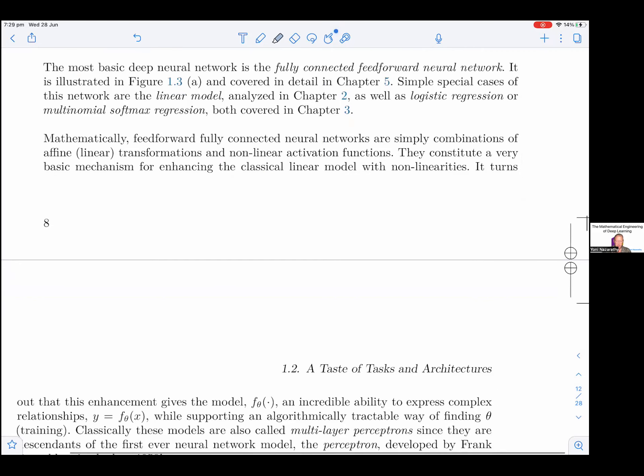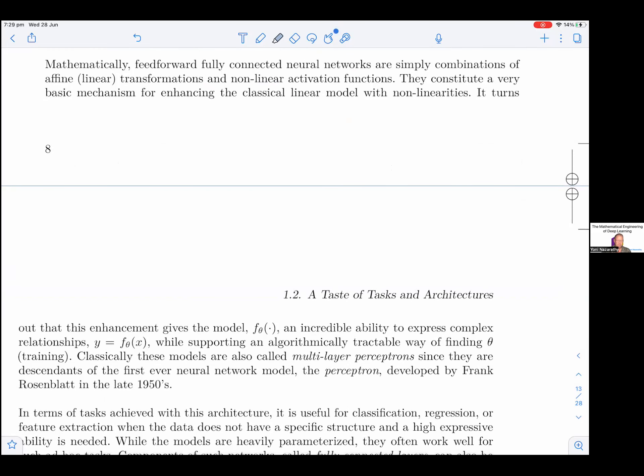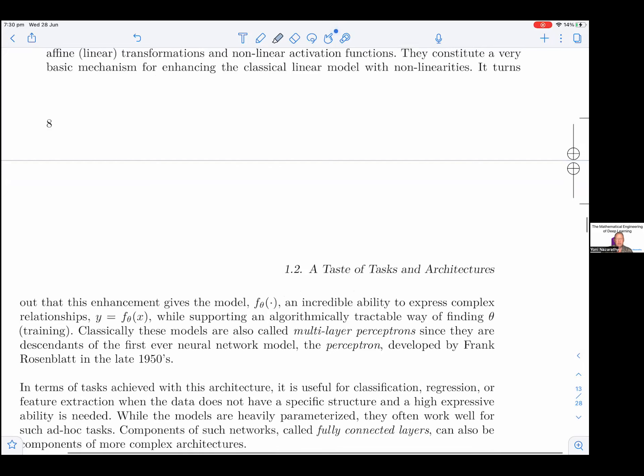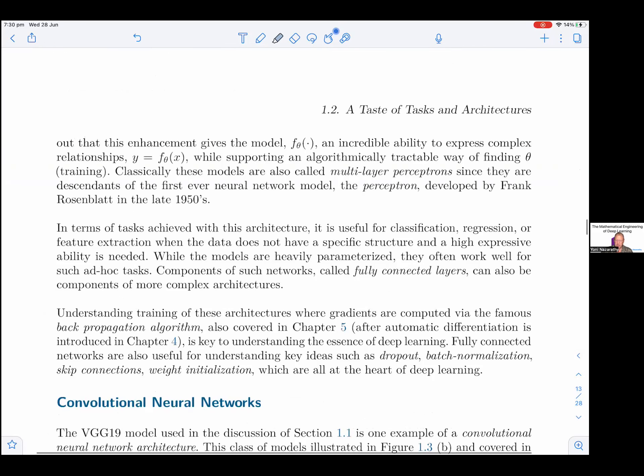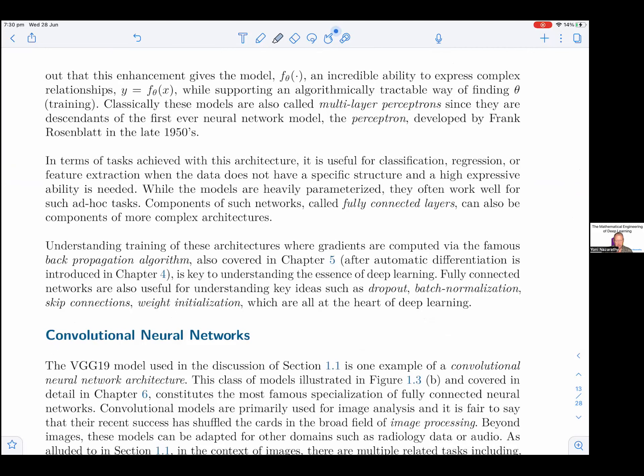Mathematically, feedforward fully connected neural networks are simply combinations of affine linear transformations and nonlinear activation functions. They constitute a very basic mechanism for enhancing the classical linear model with nonlinearities. It turns out that this enhancement gives the model F sub theta an incredible ability to express complex relationships, Y equals F sub theta of X, while supporting an algorithmically tractable way of finding theta, that's training.